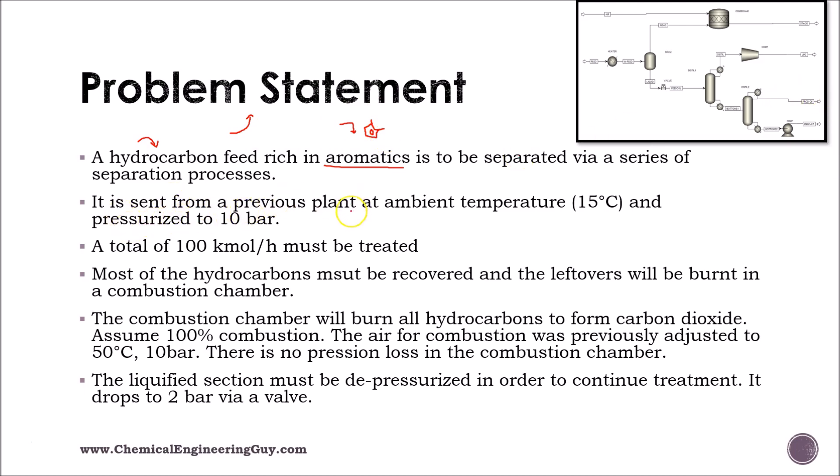It is sent from a previous plant at ambient temperature, so maybe we're in a cold place, 15 celsius, and it is pressurized to 10 bar. So we're going to assume that the 10 bars are directly here in the inlet of our plant. A total of 100 kmol per hour must be treated. The good thing on Aspen Plus is whenever you want to change this 100 kmol you can do it and you don't need to change the process sizes. It will be scaled according to the numbers.